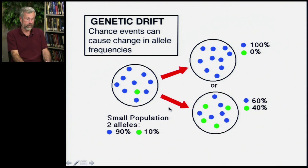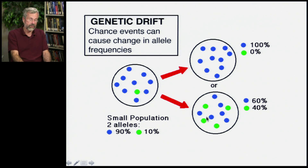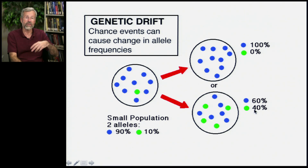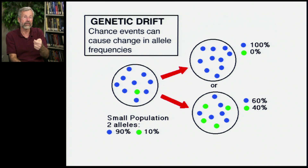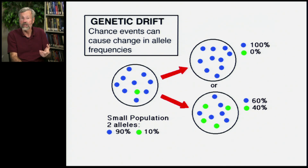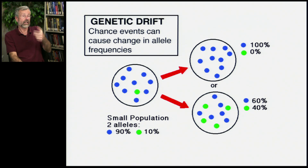Or it could go the other way. Maybe that heterozygote happens to be really lucky and has most of the offspring, so the next generation of five individuals now has four carrying the green allele — again, a huge change. But this can happen with very small numbers. It's like flipping a coin: by chance you might flip heads four or five times in a row, whereas if you flipped it 5,000 times in a row, you would never get all the same result.